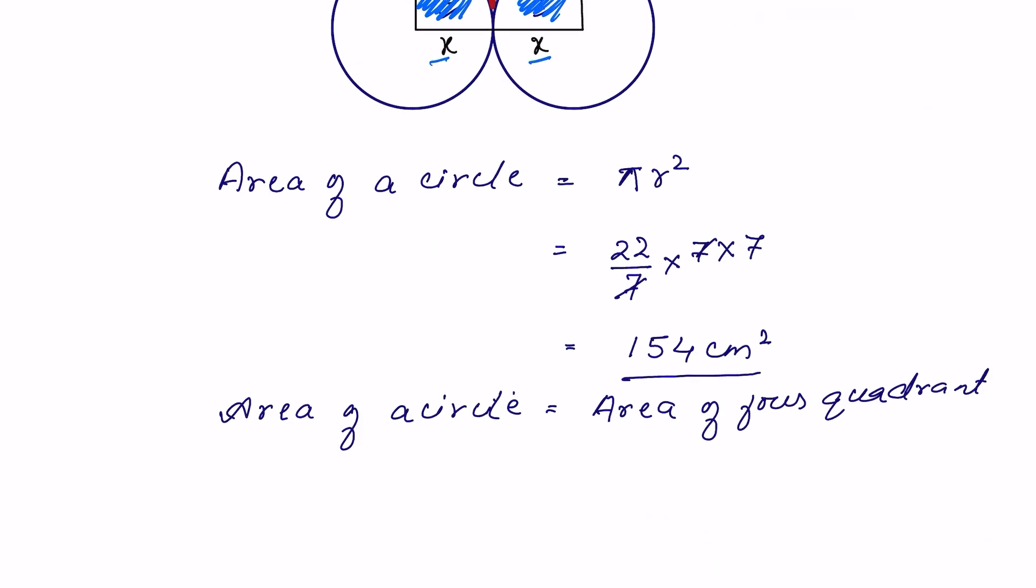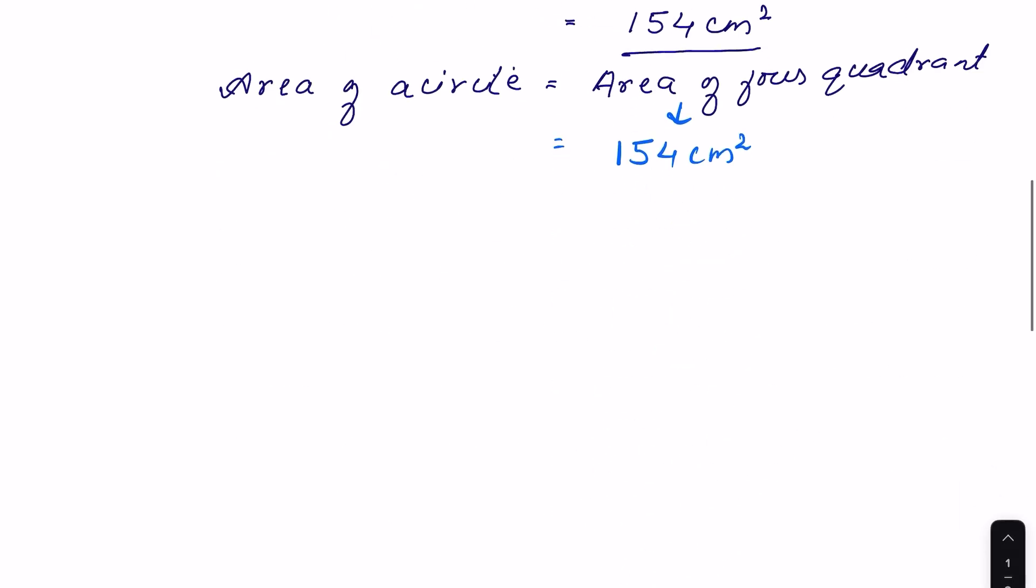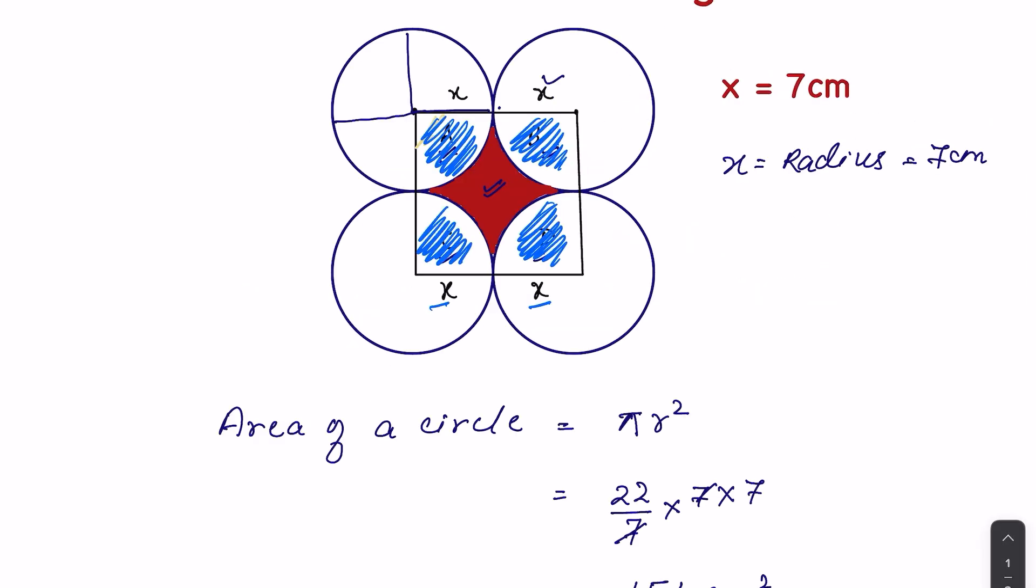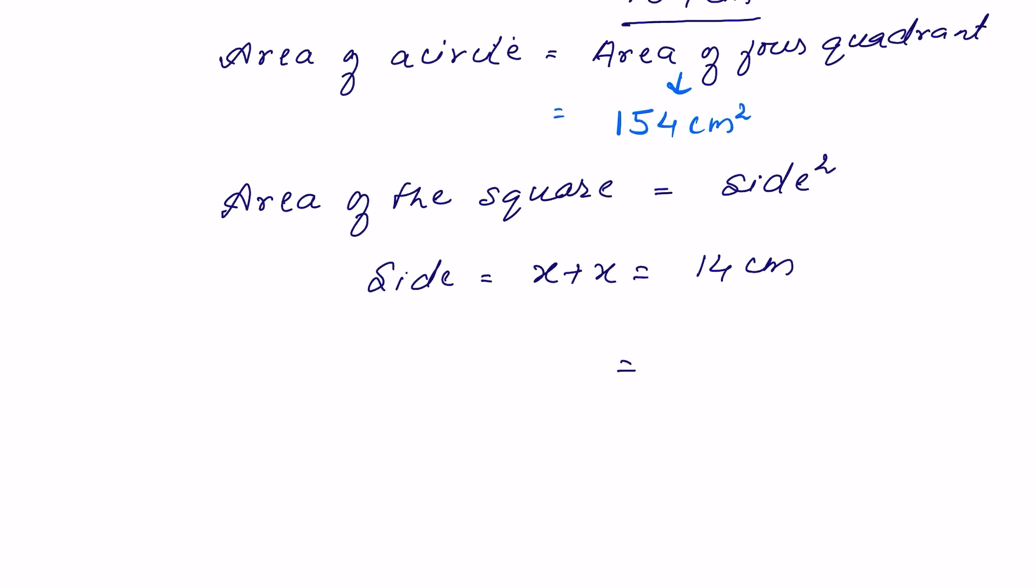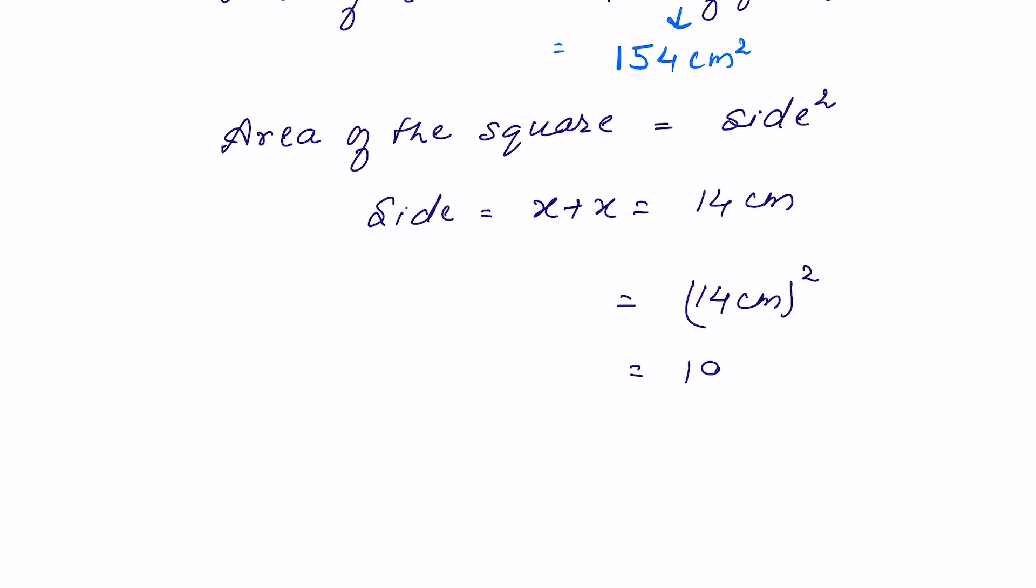So area of four quadrants is 154 cm². If we find the area of the square, it is equal to side square. Now side here is x plus x. So side of the square is x plus x, that is equal to 14 cm. So area of the square is 14 cm square, or this is equal to 196 cm².